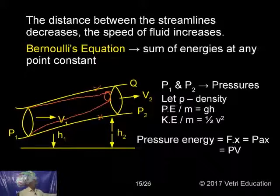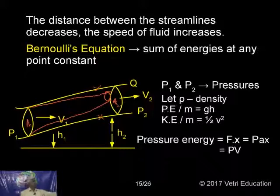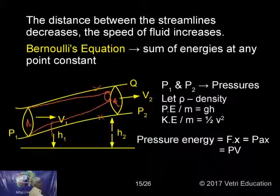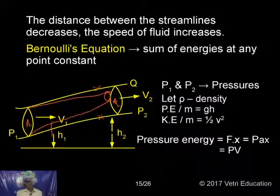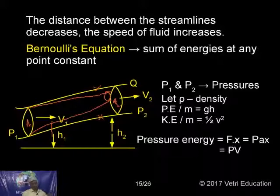Here, V1 is at the larger area of cross section, A2 is the smaller area of cross section. Therefore velocity V2 is more and velocity V1 is less. Kindly modify this diagram. This is height P1, this is height P2 — H1 and H2. H2 is slightly more than H1. One end of the tube has a larger area, another end has a smaller area. Liquid flows from P1 to P2.